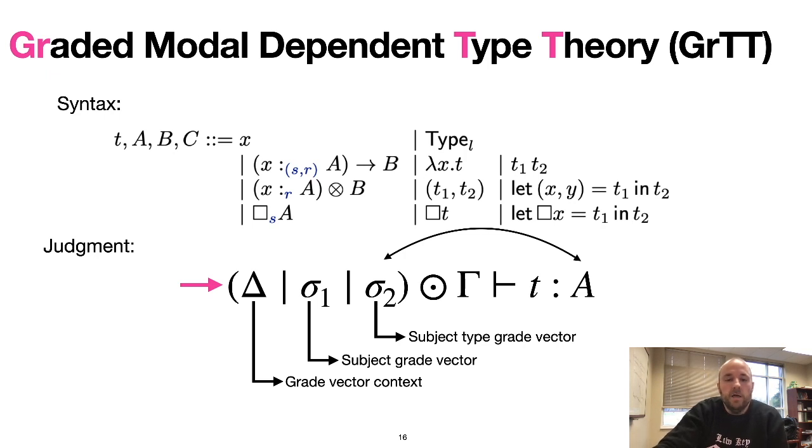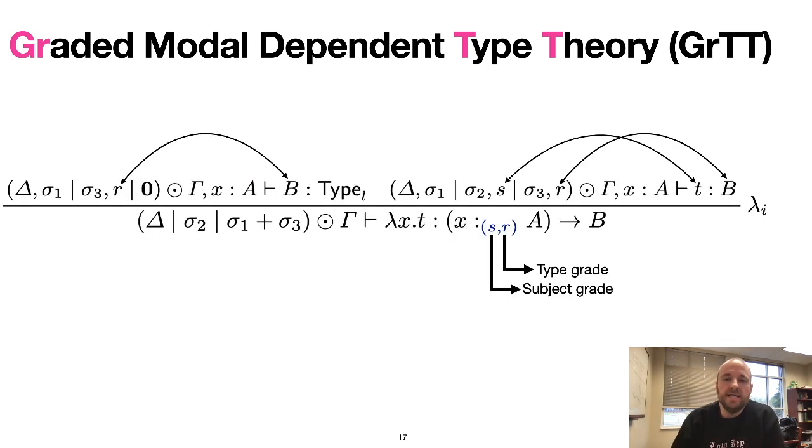Let's consider a typing rule to help us in understanding how these are used during type checking. In this rule, we can see that the subject grade s is added to the subject grade vector, and the grade r is added to the subject type grade vector when typing t. But r is also added to the subject vector when typing b. An additional insight is that sigma 1 and sigma 3 are copied across both judgments. We retain the same grading because these copies are used for well-formedness checks rather than true usage. However, when we move down the rule, we combine these using addition to accumulate the type grade usage. And this really stems from the fact that we have gamma copied across both premises. And this is true across the entire system, but the grade vectors will describe the usage of gamma in each premise. And so if something isn't used, then its grade would be 0.